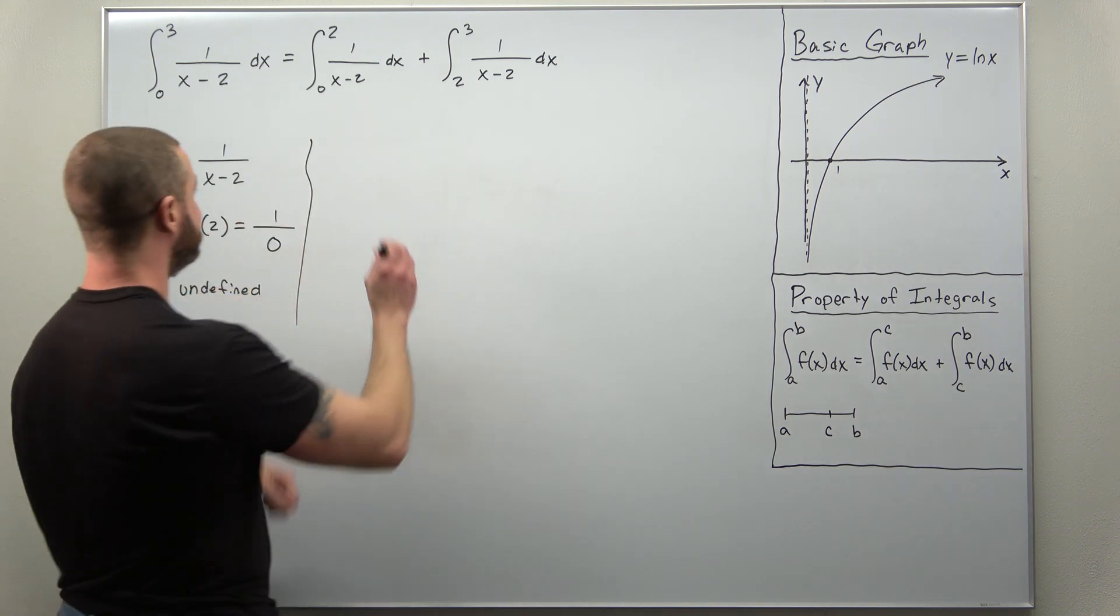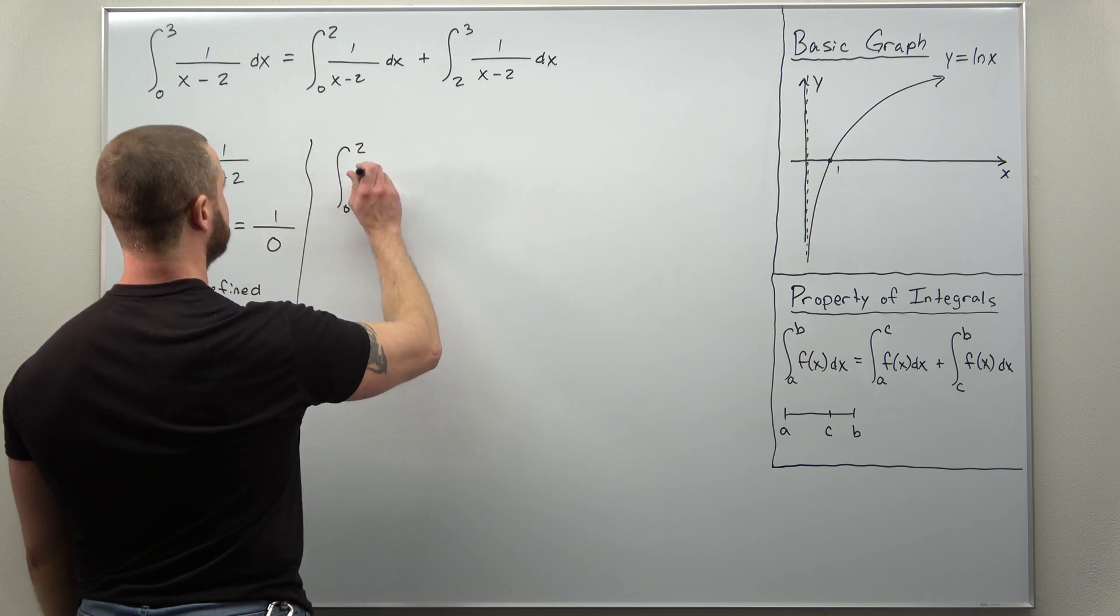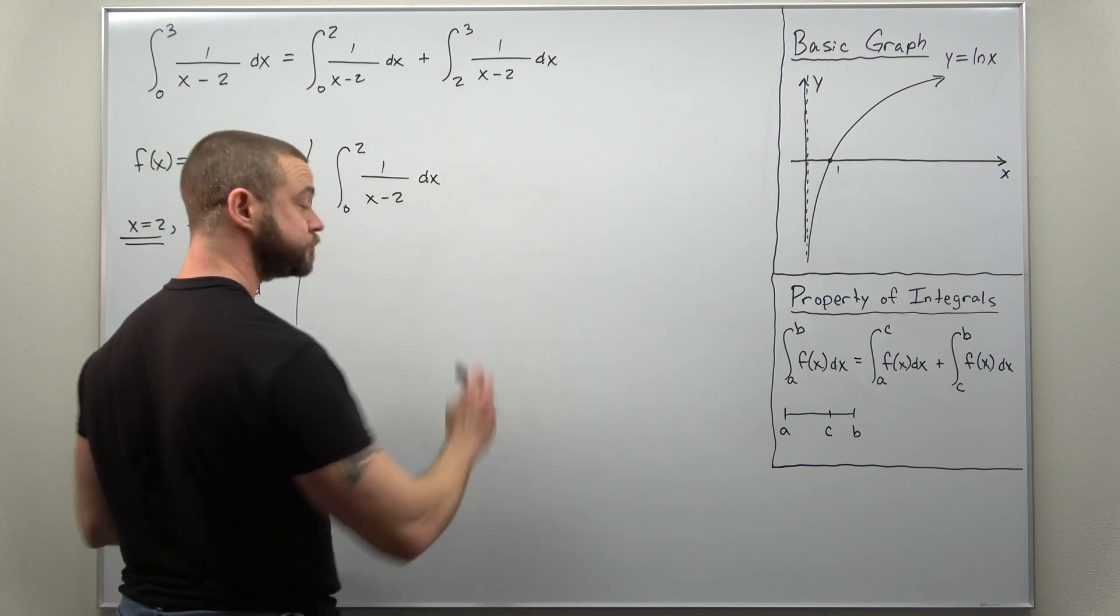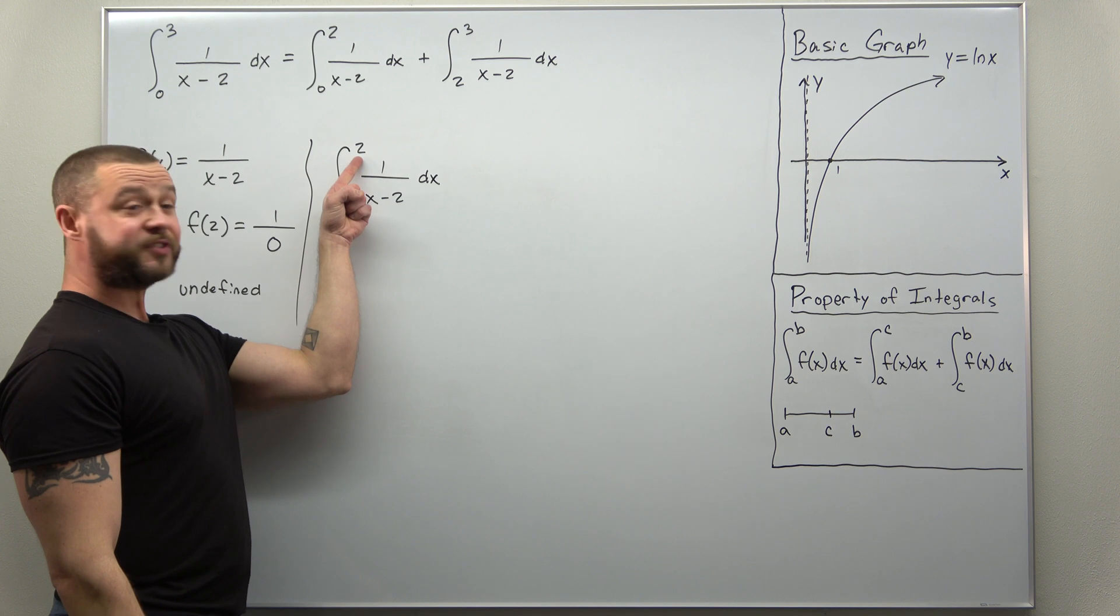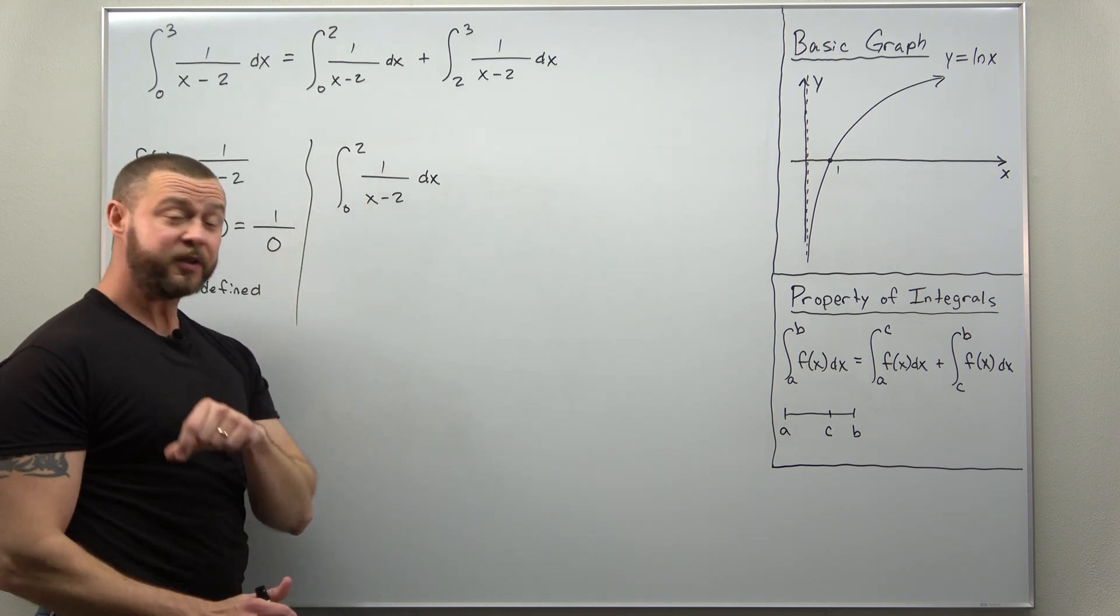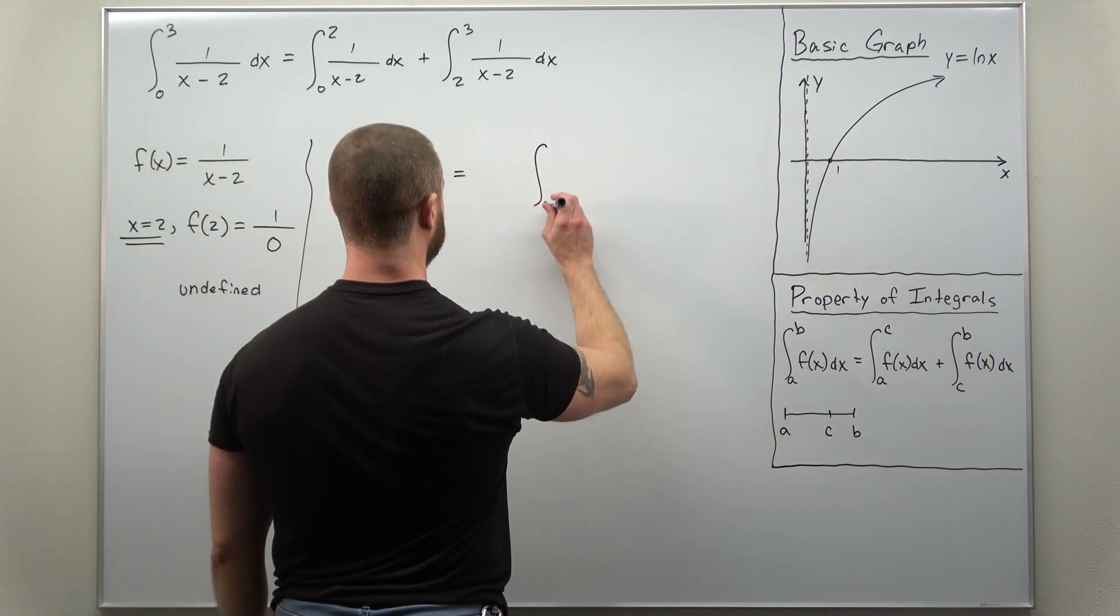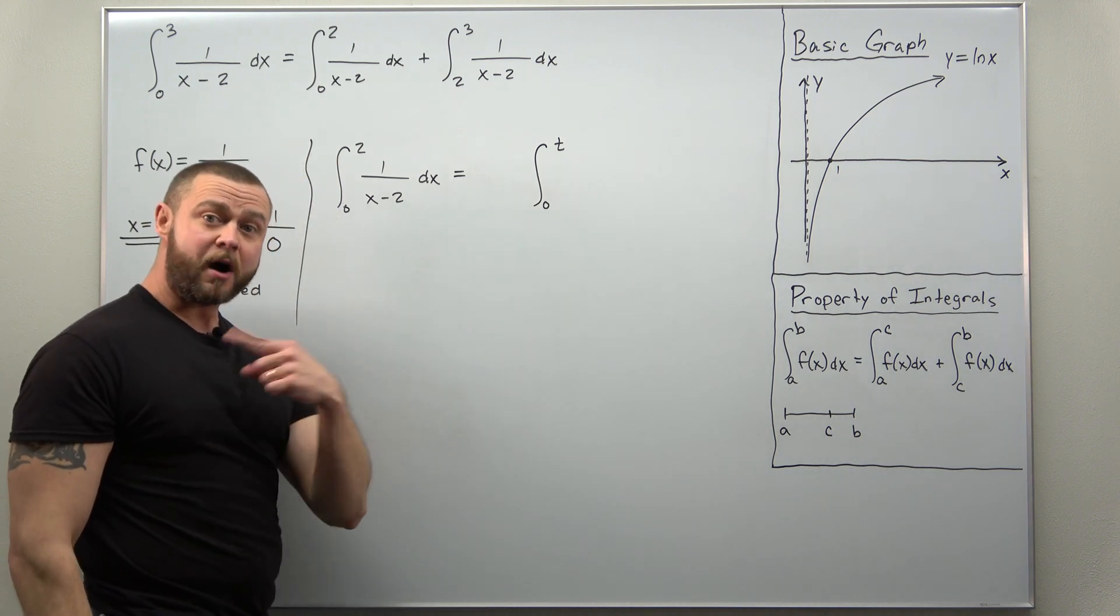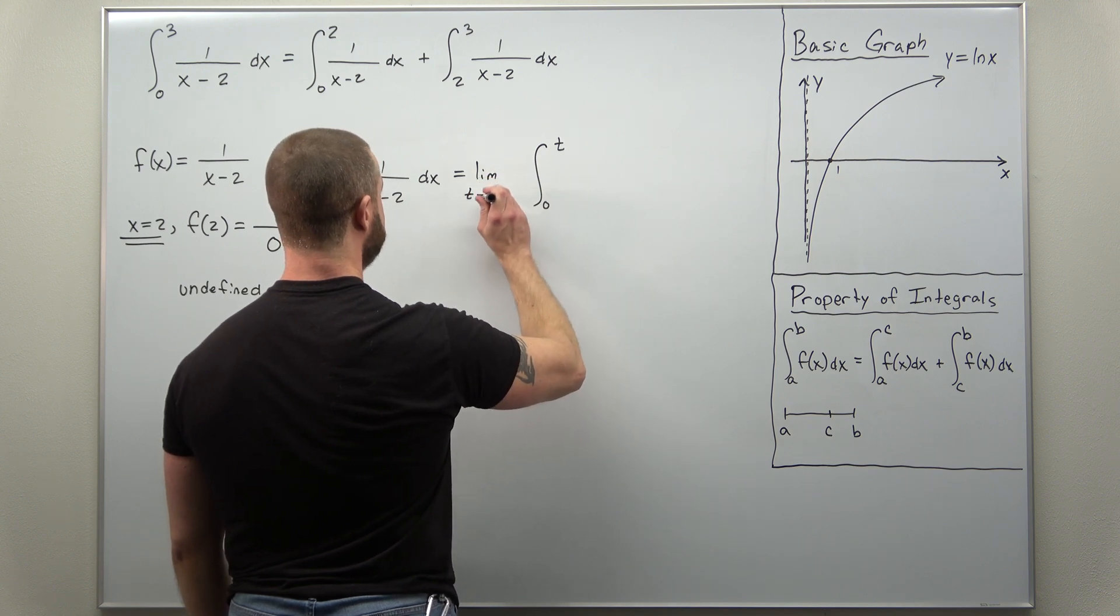We'll start with the integral from 0 to 2 of 1 over x minus 2. Your basics kick in. We're going to replace the problematic limit, in this case x equals 2, we're going to replace that with t, and then we take a limit as t approaches 2.